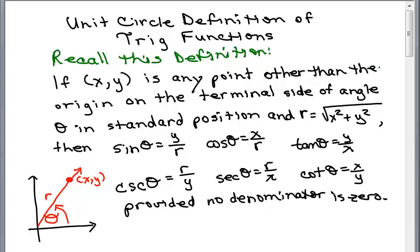then the sine of θ is y over r, cosine of θ is x over r, the tangent of θ is y over x, et cetera. And of course, we have to make sure no denominator is zero.